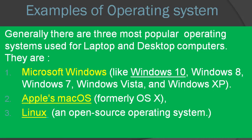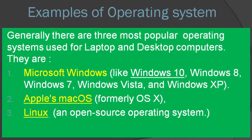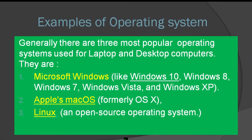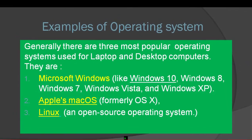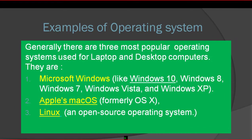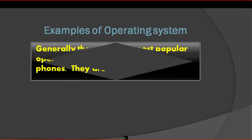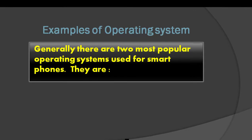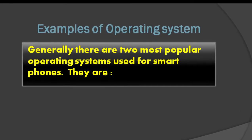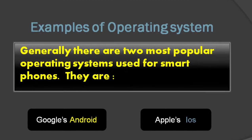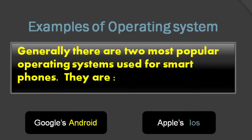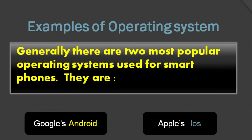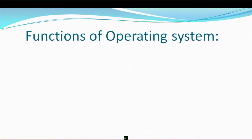Examples include Microsoft Windows, Apple macOS for desktop and laptop computers — these are the most popular operating systems. For mobile and smartphone devices, the most popular smartphone operating systems are Google's Android and Apple's iOS, which is a portable mobile operating system.